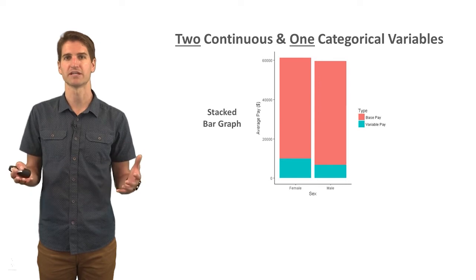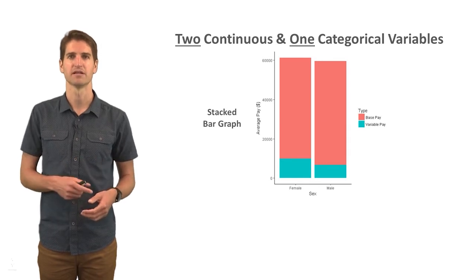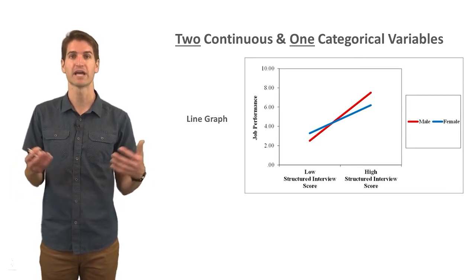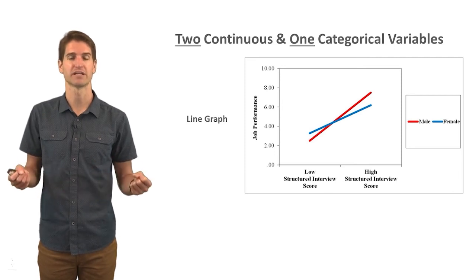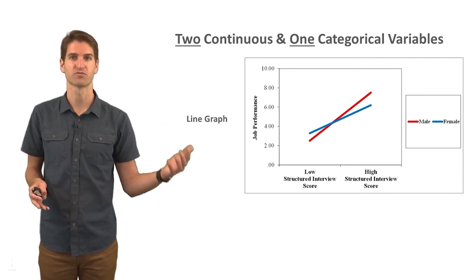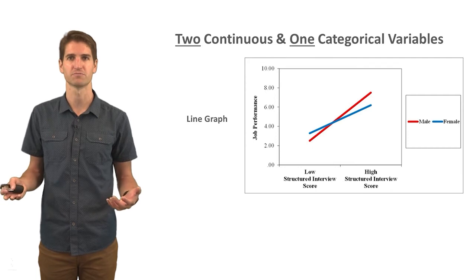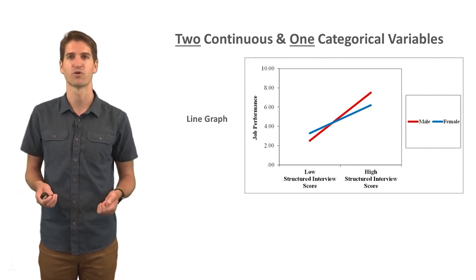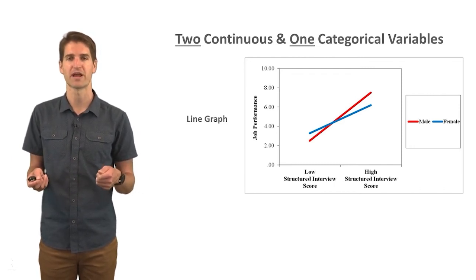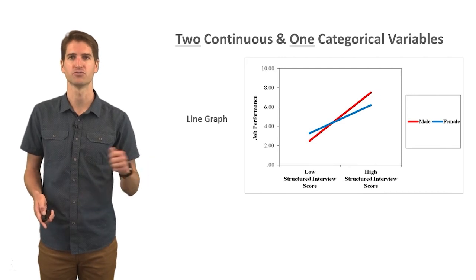We could also display similar data using a stacked bar graph, where we stack the values on top of each other, though these can sometimes be tricky to read. We can also use a line graph — for instance, in a criterion-related validation study, we have structured interview scores on the x-axis and job performance on the y-axis, with a categorical variable of male versus female as the third variable, where we're interested in differential predictability. Red corresponds to male and blue to female, and we can see whether there are apparent differences in the extent to which the structured interview predicts job performance scores for these two different categories of people.